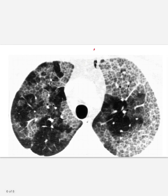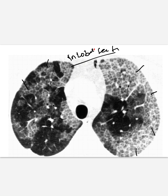This is a case with GGO present in the bilateral lung fields with interlobular septal thickening. This interlobular septal thickening with GGO is present in alveolar proteinosis, giving the typical sign of the crazy paving pattern.